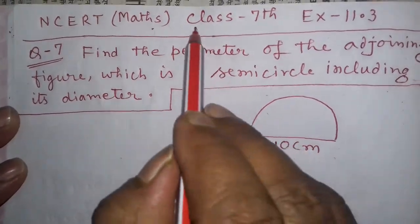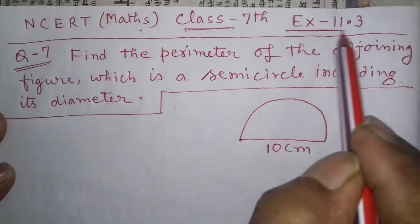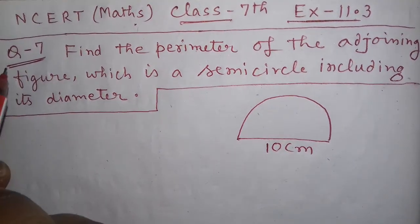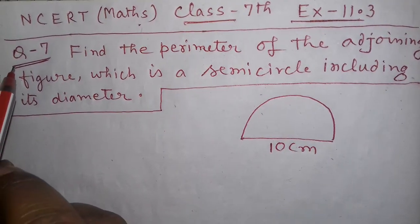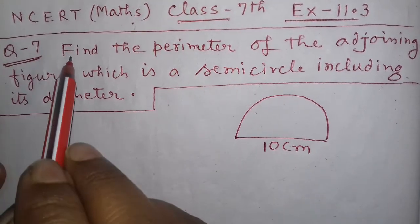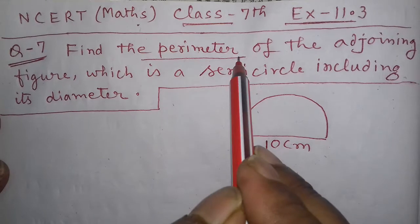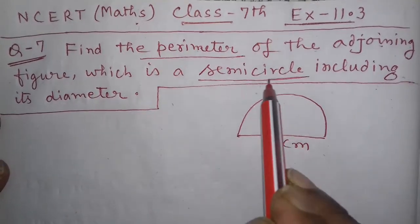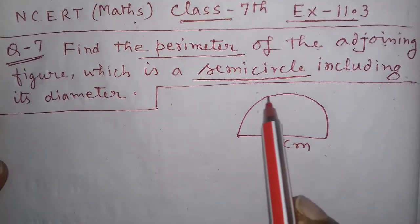NCERT Maths Class 7, Exercise 11.3, Question Number 7. This is a very important question, students. Find the perimeter of the adjoining figure, which is a semicircle. A semicircle means half of a circle.